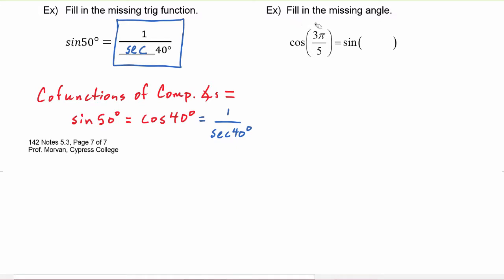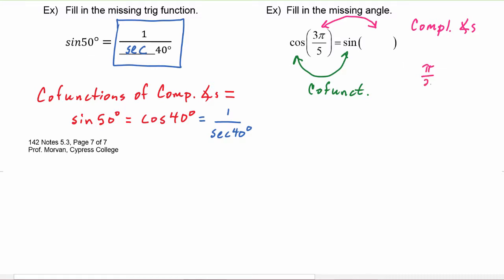In this example we are asked to fill in the missing angle: cosine of three pi over five has to equal sine of some argument. Because these two are co-functions, these two angles have to be complementary. To figure out the missing angle we do pi over two minus three pi over five. To subtract those we get the common denominator of ten and take the cross products in the numerator: five pi minus six pi, which works out to be negative pi over ten. So negative pi over ten is the missing argument.